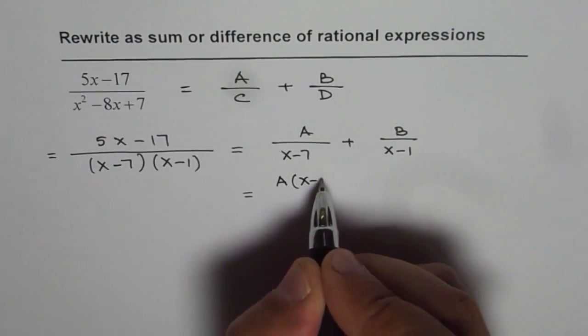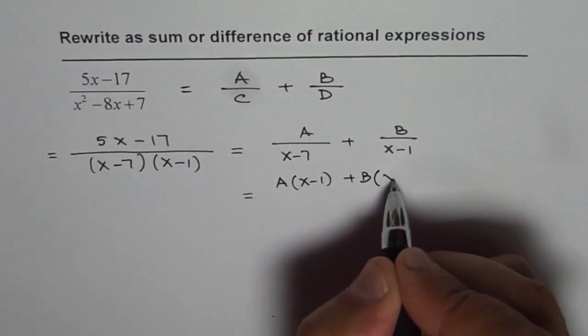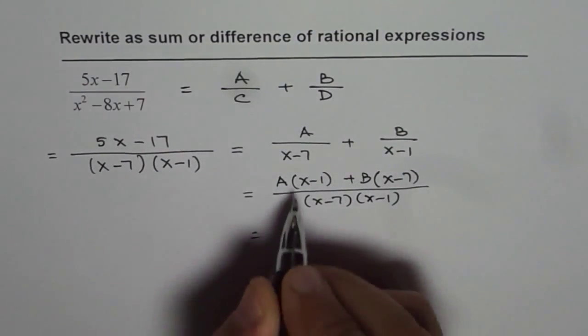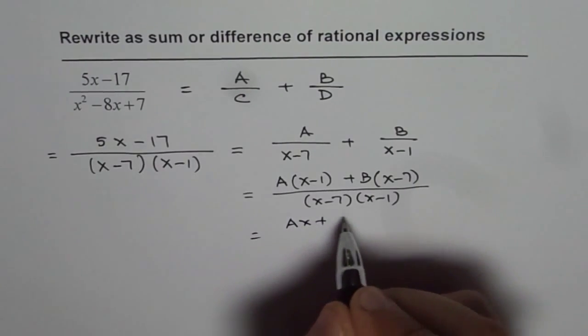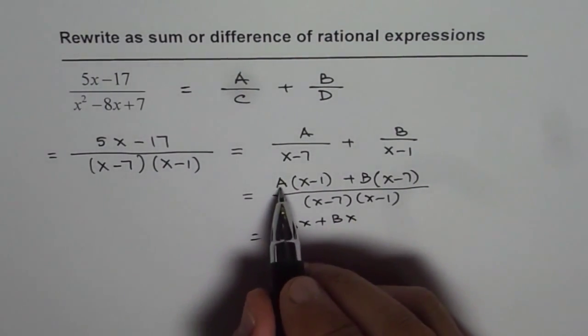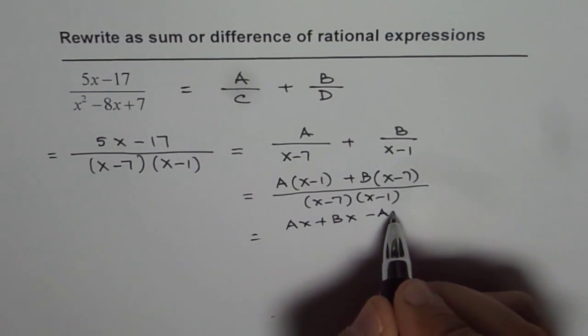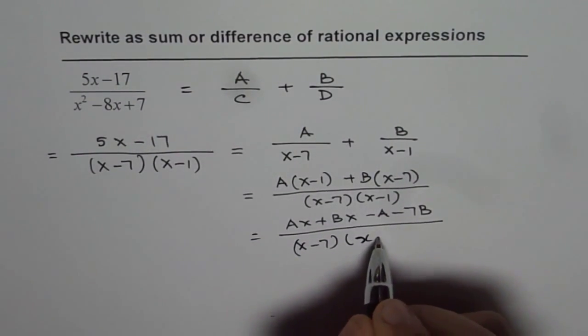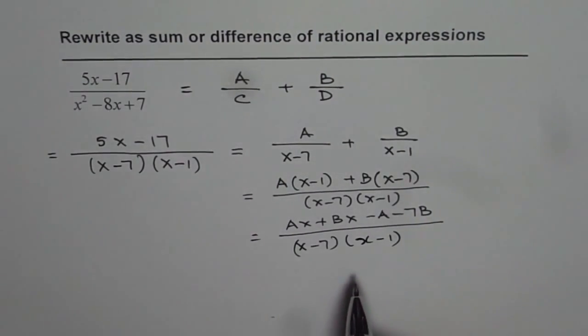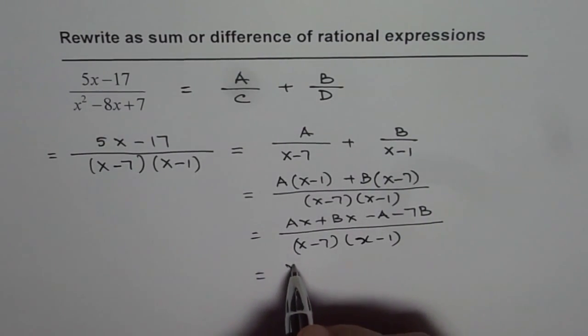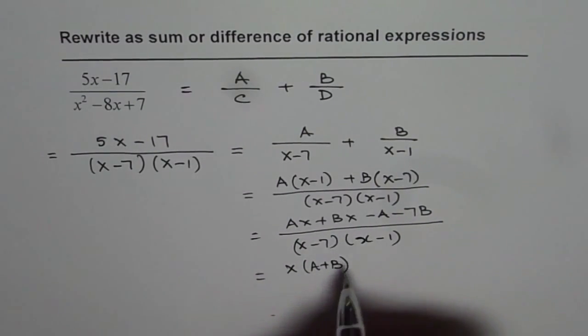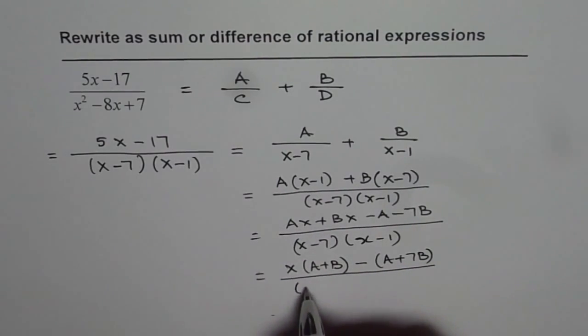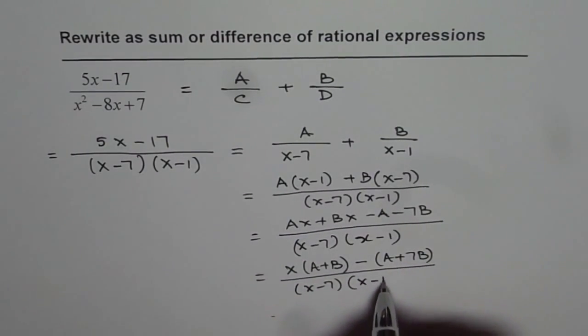So what we get is a times x minus 1 plus b times x minus 7. The denominator is, as before, x minus 7 times x minus 1. If we expand the numerator, we get ax plus bx. I am writing the x terms first, and the constants are minus a and minus 7b divided by x minus 7 times x minus 1. So if I combine these x terms, I get x times a plus b and the constant is minus a plus 7b divided by x minus 7 times x minus 1.